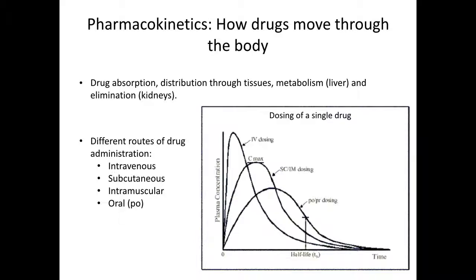In this graph, the same dose of drug injected intravenously will produce the highest plasma concentration the fastest. It also has the fastest descending limb of the dose curve. Intramuscular and subcutaneous injections are the next fastest, with some of the reduced speed occurring because the drug needs to be absorbed into the peripheral circulation from the injection site.